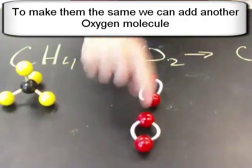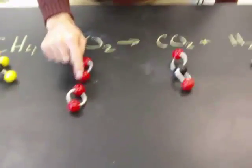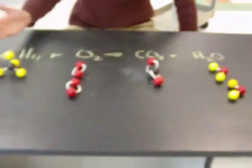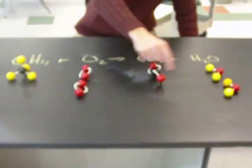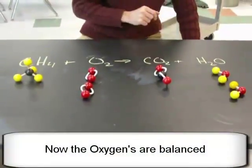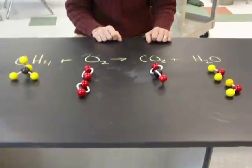So in order to make those the same, I'm going to introduce another oxygen. So now I have one, two, three, four oxygens on the left side of the arrow. And one, two, three, four oxygens on the right side of the arrow. So now they're the same.